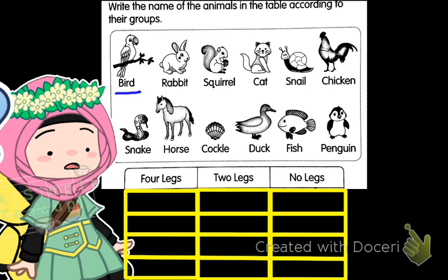Bird has two legs. So let's find other two-legs animals. Chicken, and then duck, and penguin. These are two-legs animals. Write them down here — bird, chicken, penguin, and duck.